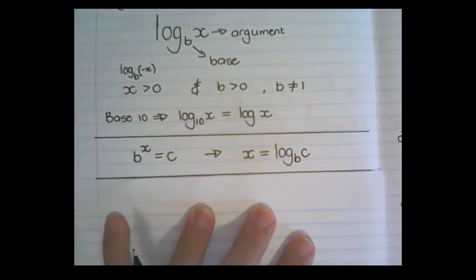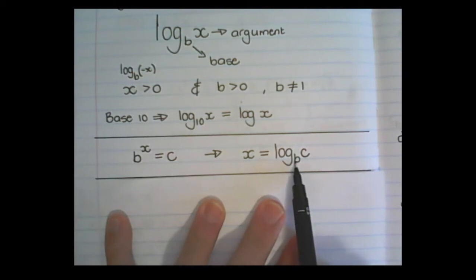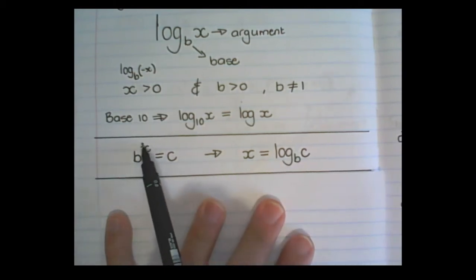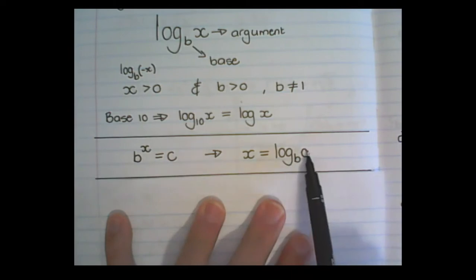Up until this point, this is how we learned how to get the log. If I have an exponential equation, b to the power of x is equal to c, and I want to solve x, what I do is, I make that b, which is the base of the exponent, that becomes the base in the log. The exponent becomes the answer, and the c, or whatever value it's equal to, becomes the argument.